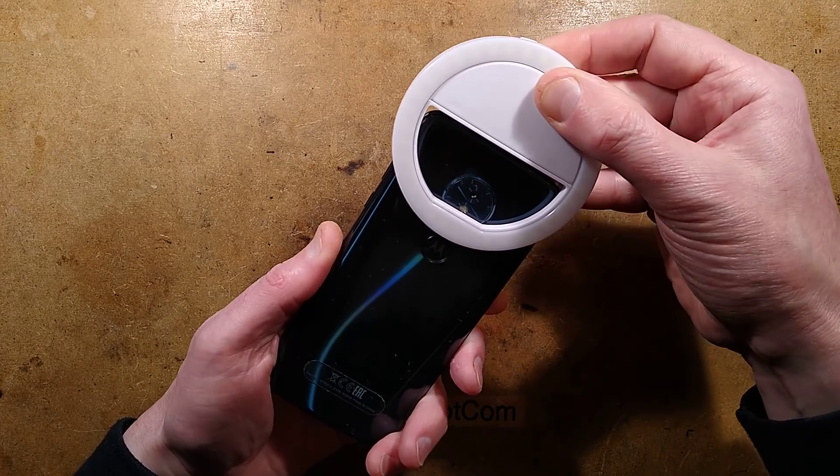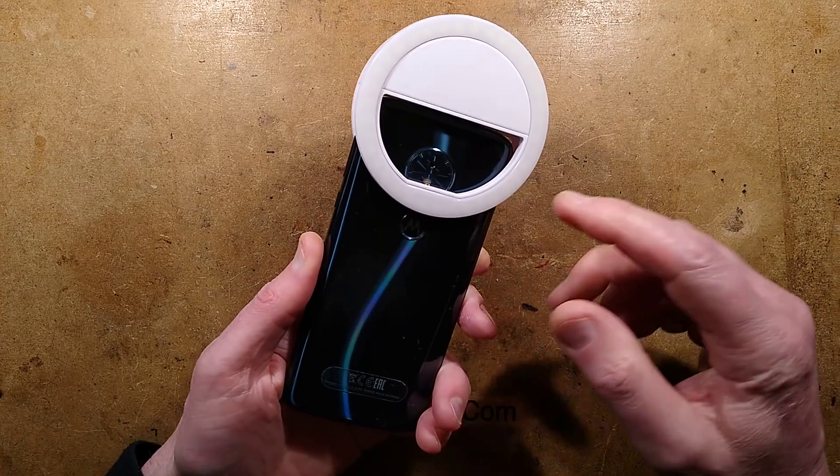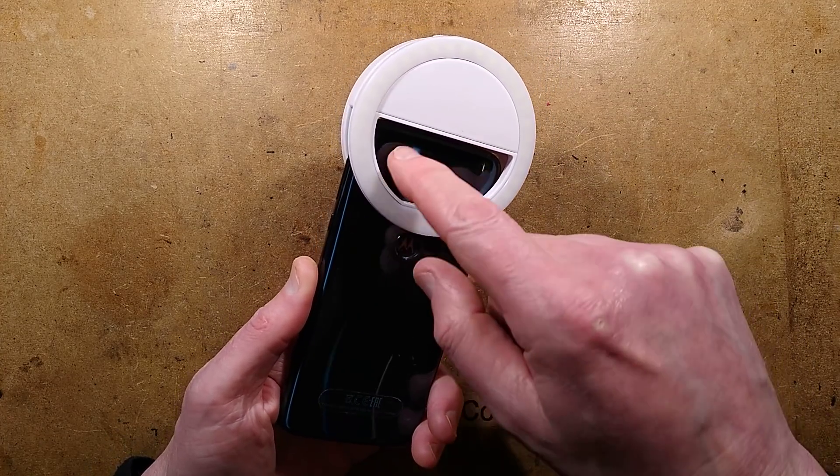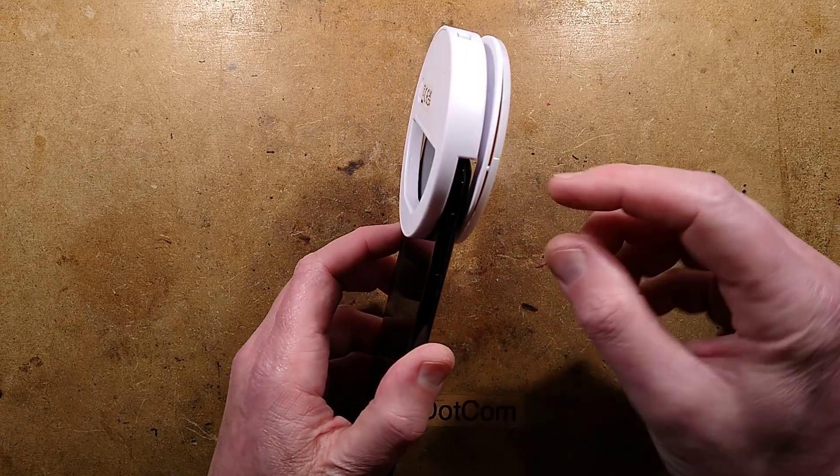The thing clips open like this. You clip it on and ideally with a ring light the camera would be right in the middle, but with these it just tends to be where it lands. It depends on where your camera actually is.